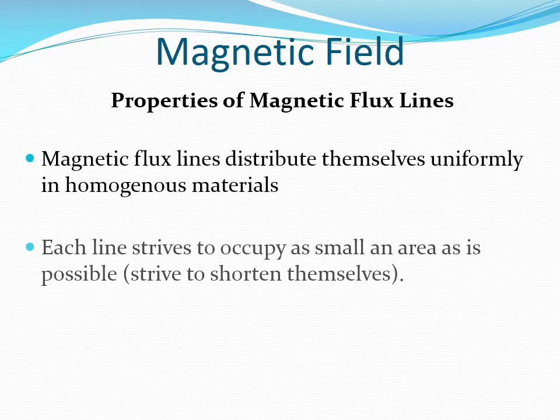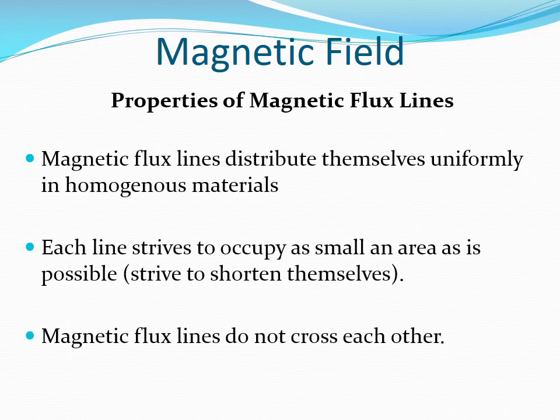Let's look at properties of magnetic flux lines. Number one, magnetic flux lines distribute themselves uniformly in a homogeneous material. Number two, each line strives to occupy as small an area as possible — in other words, it strives to shorten itself. Number three, magnetic flux lines do not cross each other.